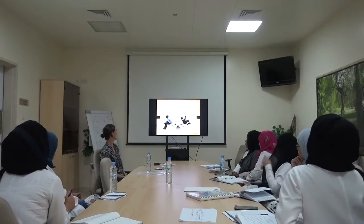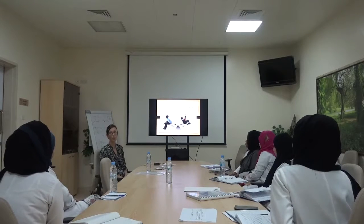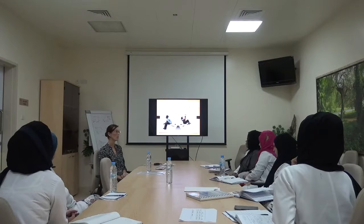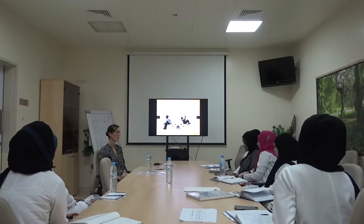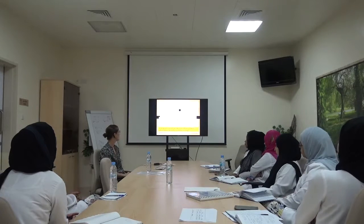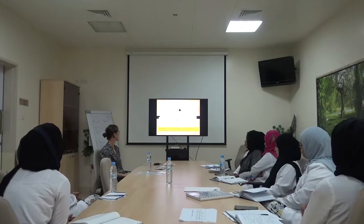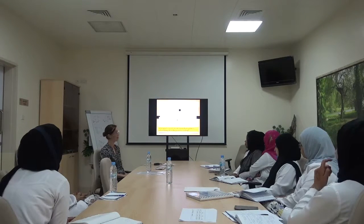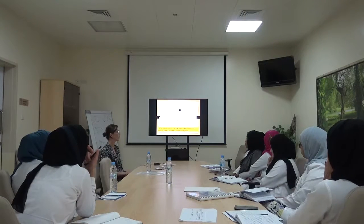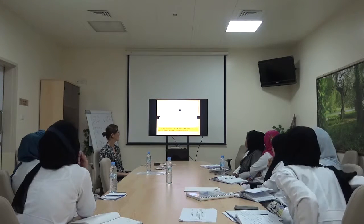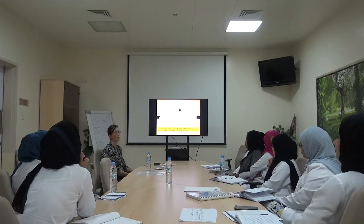Let's move to our second example: predictive testing for a condition for which there is no treatment — Huntington's disease. It's adult onset, full penetrance, no treatment available. We see Khalid, a young gentleman who comes to talk about predictive testing. His father, aged 67, died and was genetically confirmed to have Huntington's disease. His brother Muhammad and sister Aisha have both been tested positive previously. He also has a young daughter of two years. What are the areas we need to focus on during the counselling session?